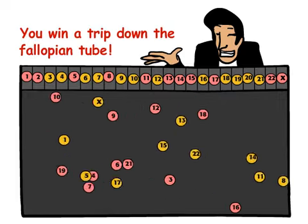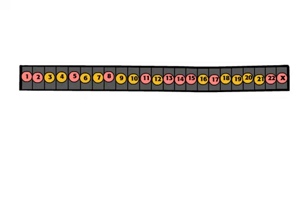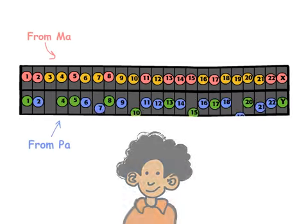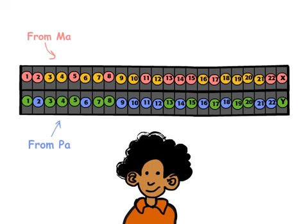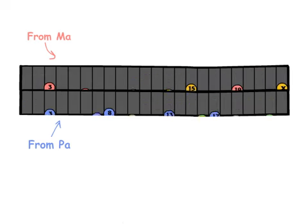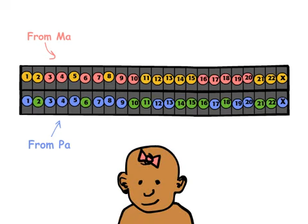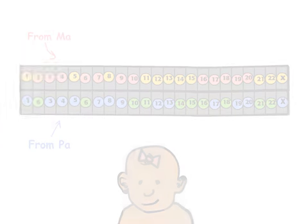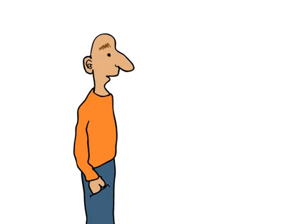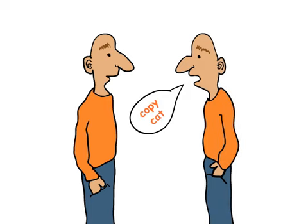This is why, when you were conceived, you obtained half of your mother's genes and half of your father's genes. But your siblings didn't necessarily get the same versions of your parents' genes that you did, unless you happen to be an identical twin.